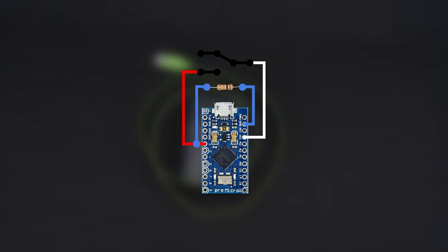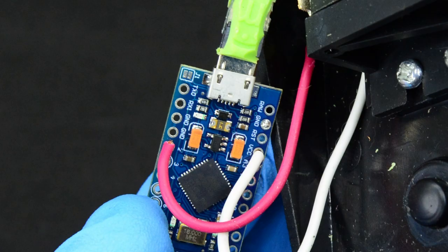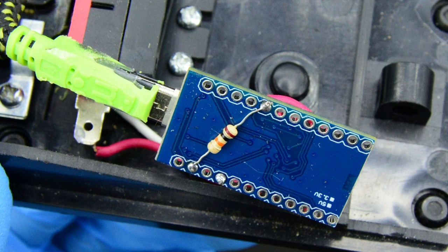This is the schematic. First solder the white wire to the VCC pin. Then the red wire to pin number 2. On the other side of the board, solder one of the leads of the resistor on the ground pin and the other lead to the same pin where the red wire is soldered.